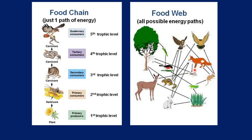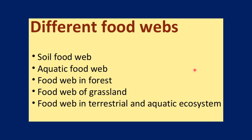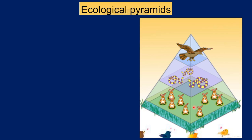There are different types of food webs possible in the environment. The first is the soil food web — transfer of nutrition and energy among soil-dwelling organisms. This is different from aquatic organisms, which differ from forest food webs, grassland food webs, and terrestrial-aquatic ecosystem food webs. Each is different because the type of organism present in soil differs from aquatic, forest, and grassland ecosystems. None are similar, so you see a wide variety of food webs in nature.